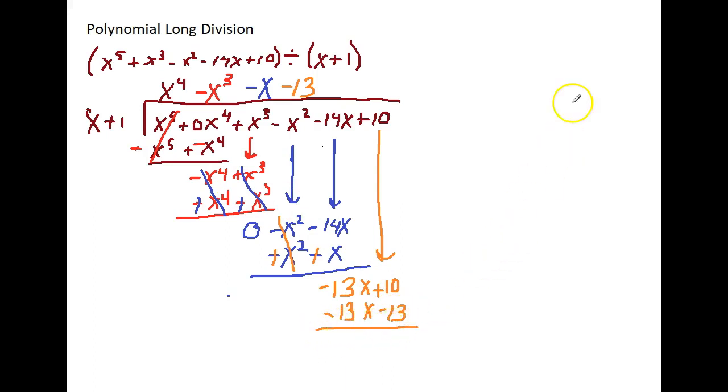My next step is to subtract. So minus a negative becomes a plus. So plus, and then minus a negative becomes a plus. This cancels out. 10 minus negative 13, which means plus 13, leaves me with 23.